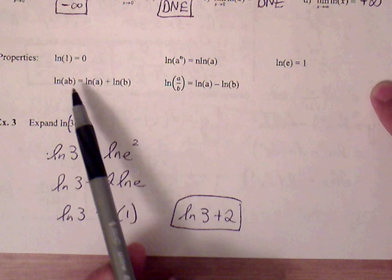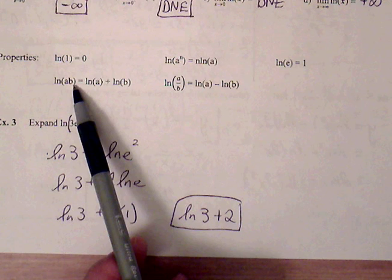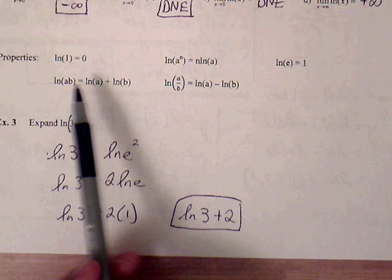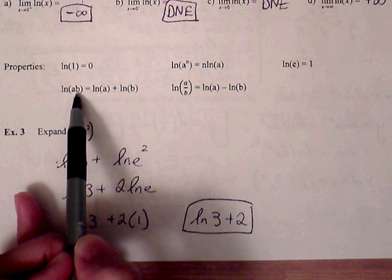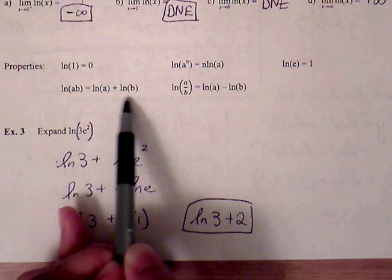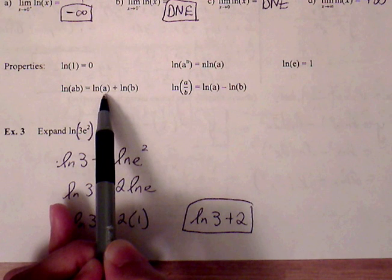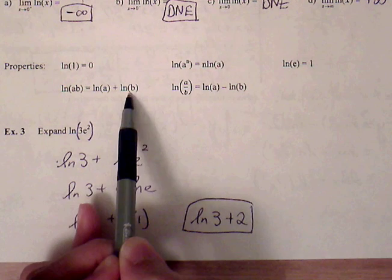Natural log of AB, this is product property. So anytime I have two terms that's multiplied inside natural log function, I can expand that using product property, LN of A plus LN of B.